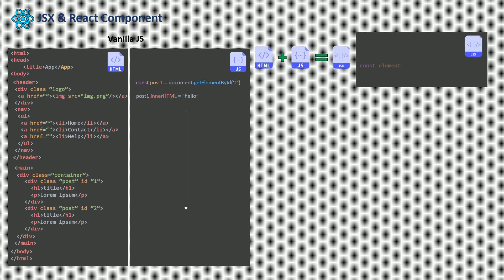With React we can write HTML inside JavaScript. Inside a div tag, if you want to put JavaScript variables, all you need to do is open your curly braces and put the name of your variable. So now we've fixed that annoying problem of going back and forth between HTML and JavaScript files — all the JavaScript and HTML are in the same place. Now we're going to create components so we can make our code smaller and easier to maintain.